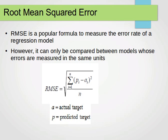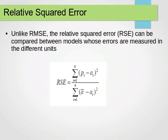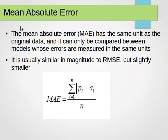The next metric is the Relative Squared Error (RSE). Unlike RMSE, the RSE can be compared between models whose errors are measured in different units. The formula is: the summation for all instances of (predicted value minus actual value) squared, divided by the summation for all instances of (a-bar minus a(i)) squared — where a-bar is the mean of the actual values, p is the predicted value, a is the actual value, and n is the number of instances.